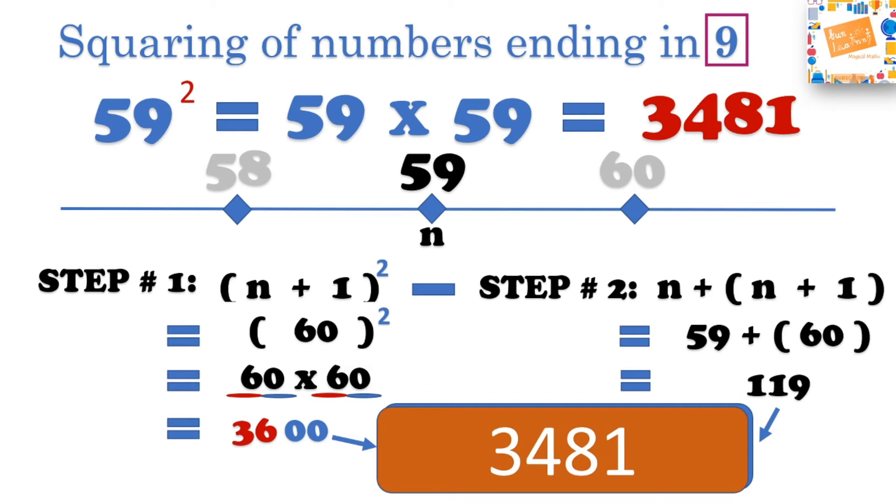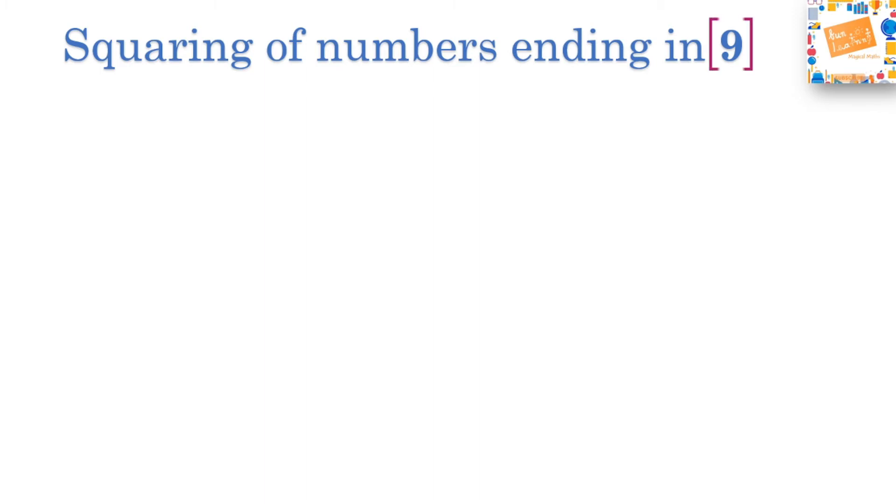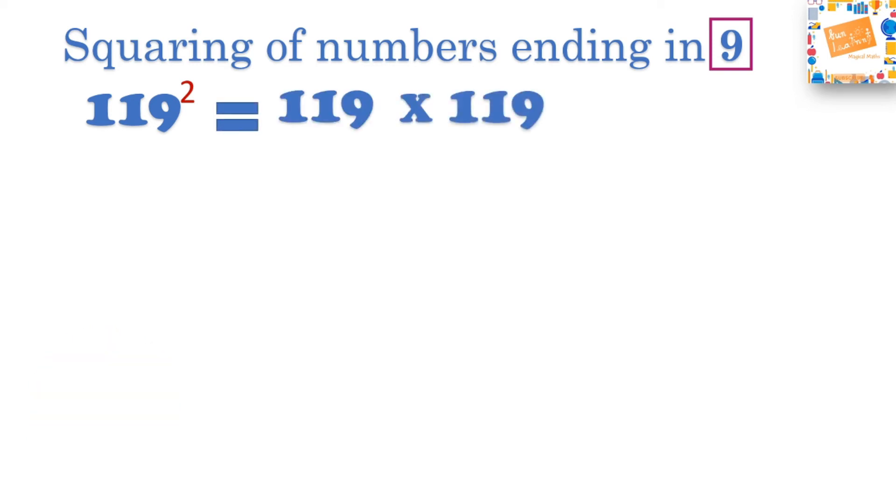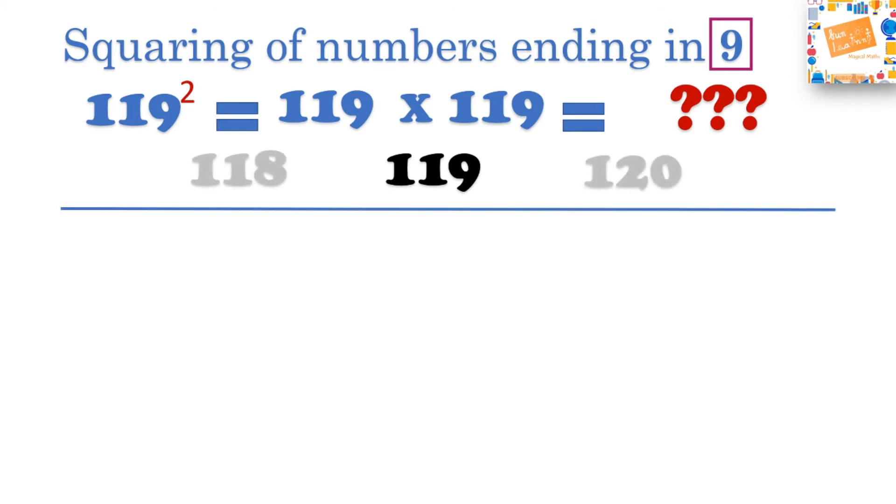Pick up your calculator, check for this answer and you will be satisfied with our result. Let's try a three digit squaring of number ending in 9. Our number is 119 square, this is equal to 119 times 119. It looks like a really big calculation. Let's find out as per our rule. Let's plot 119 on the number line with what comes before and after. We have the nearest 10 to be 120. Let's mark 119 as our main n.